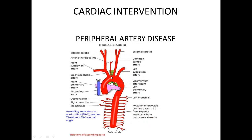The next blood vessel is called the arteria lusoria — it's not a consistent blood vessel so we won't include it. Then you have the left common carotid, which divides into an internal and external carotid, and then you get your left subclavian.